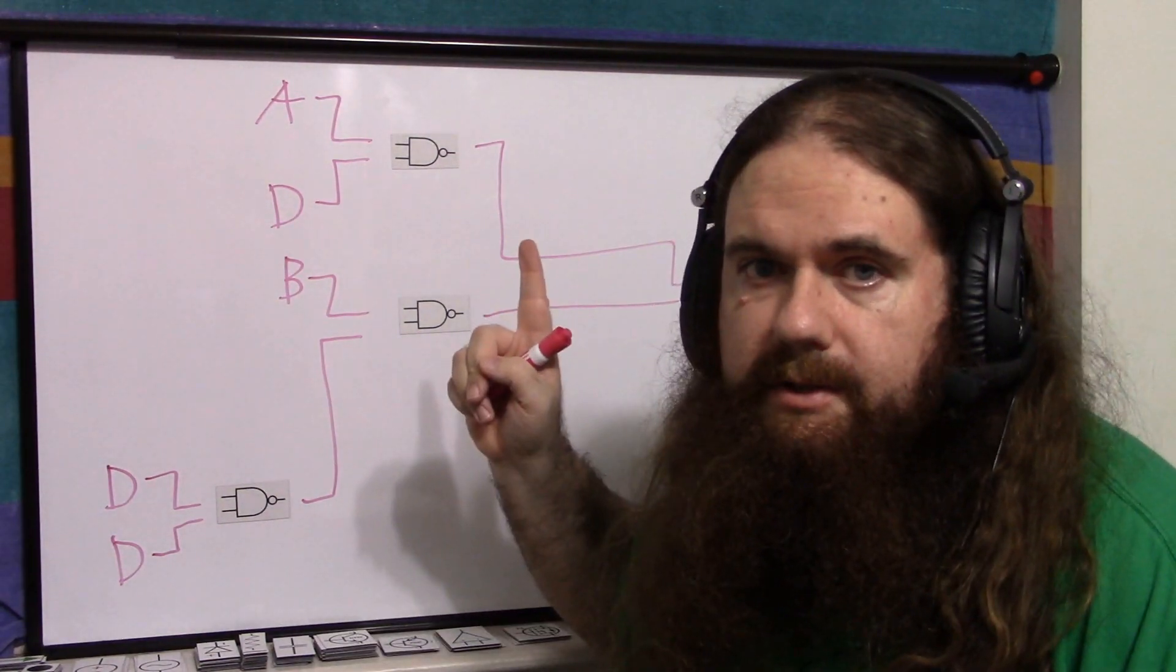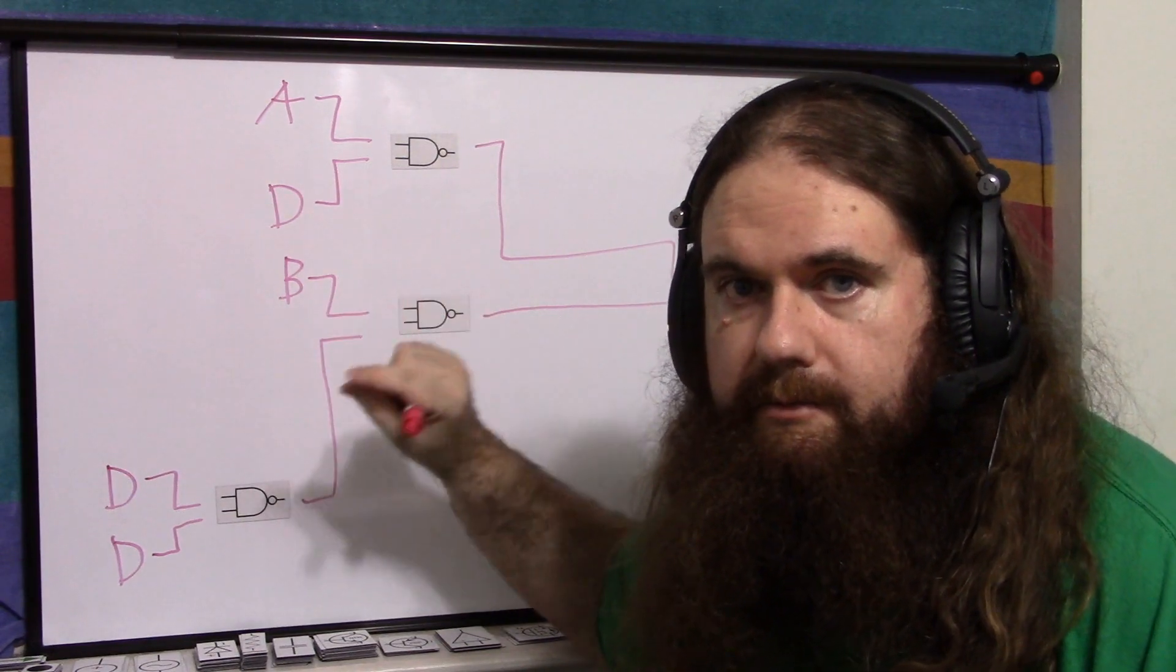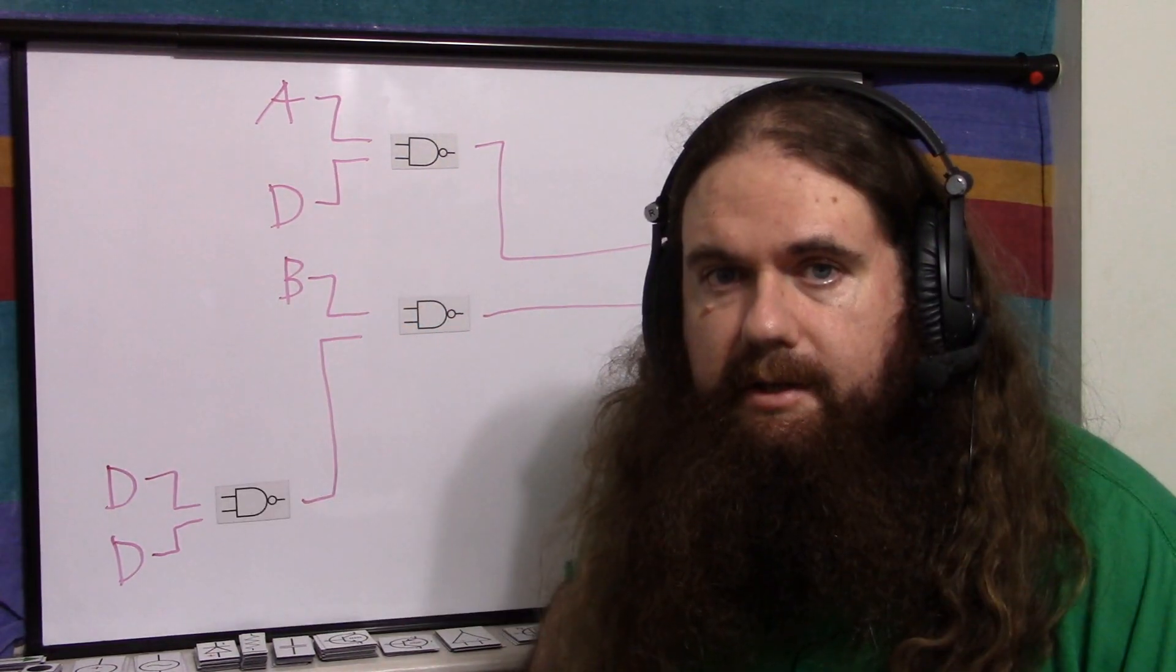And this is a two to one digital MUX. So we have one bit that selects the direction or which one you could say, input zero, input one, however you want to look at it. Easy enough.